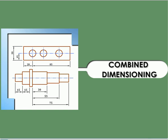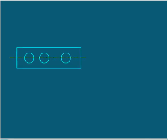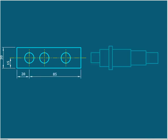Combined dimensioning. Both the methods of chain dimensioning as well as parallel dimensioning are used to conveniently represent the dimensions.